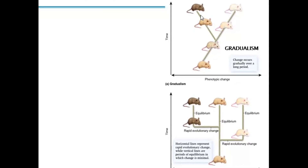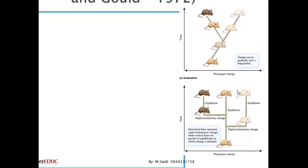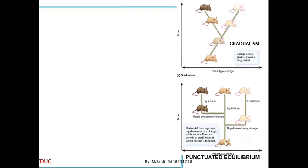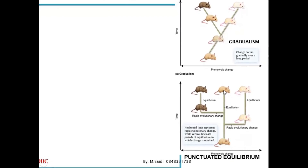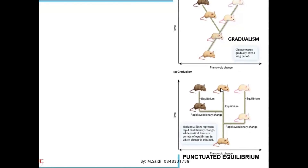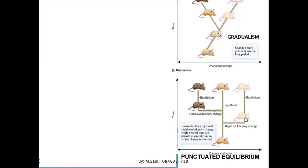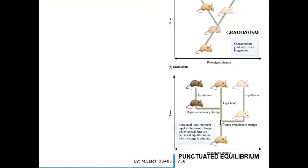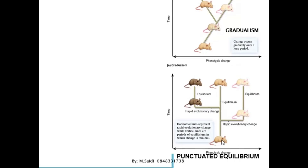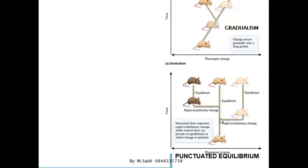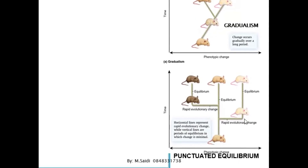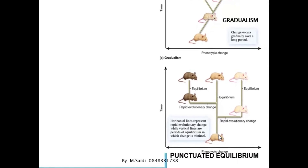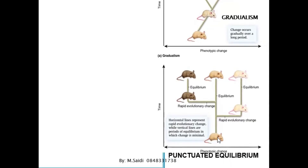That is gradualism. In punctuated equilibrium, the rat starts here and stays the same for a long period of time. But then when it reached a certain point, suddenly, within a short period of time, it changed from this color to this color — immediately, without a long period of time. This suggests that maybe a mutation occurred and the organism changes rapidly.